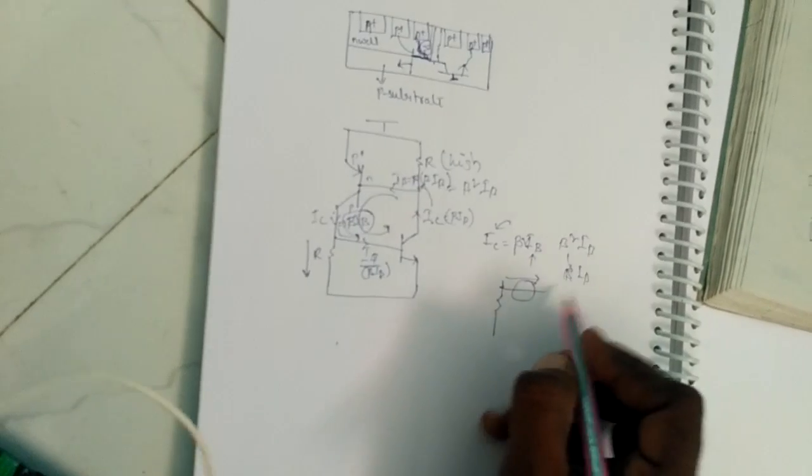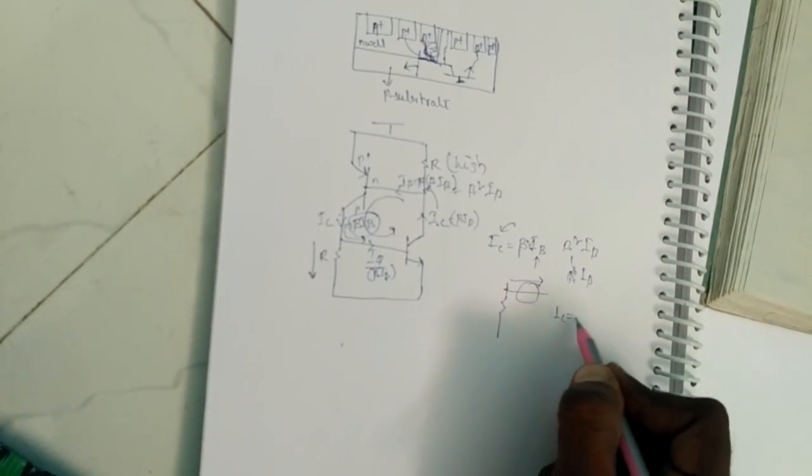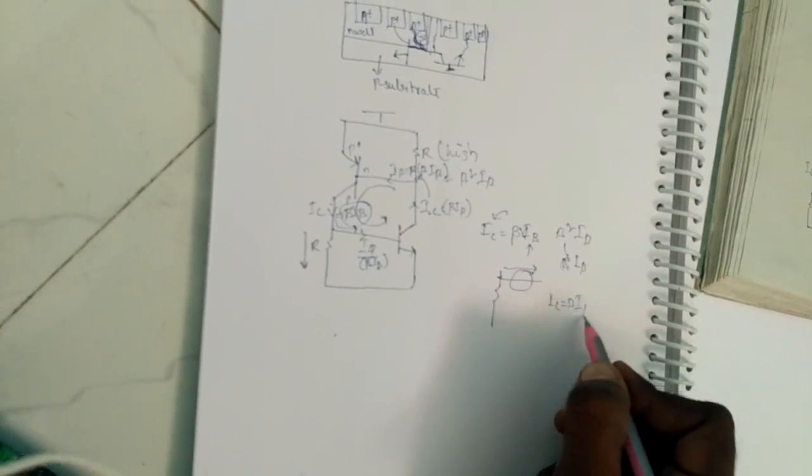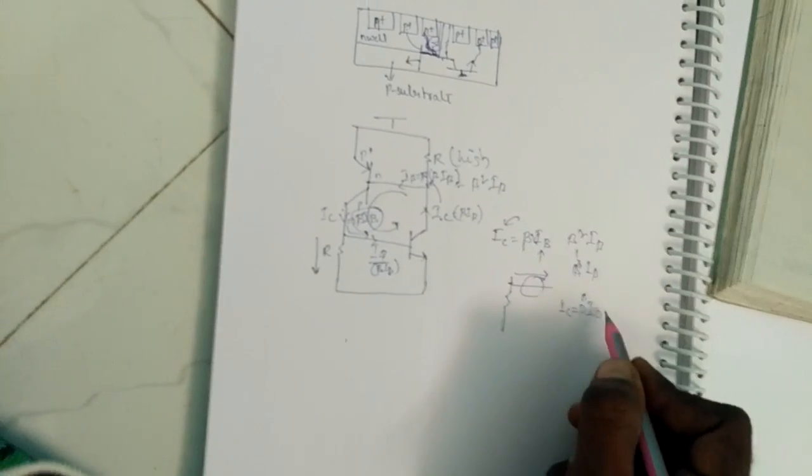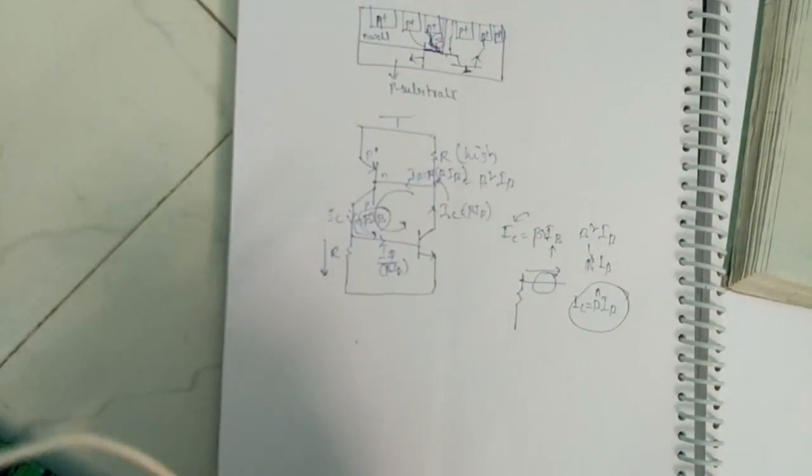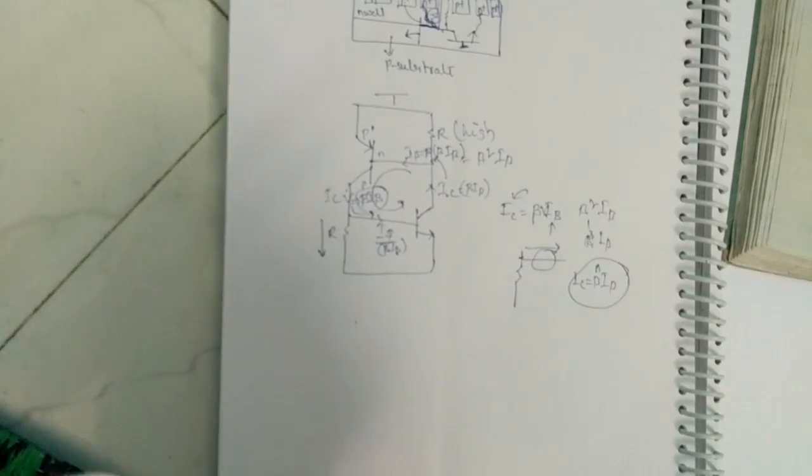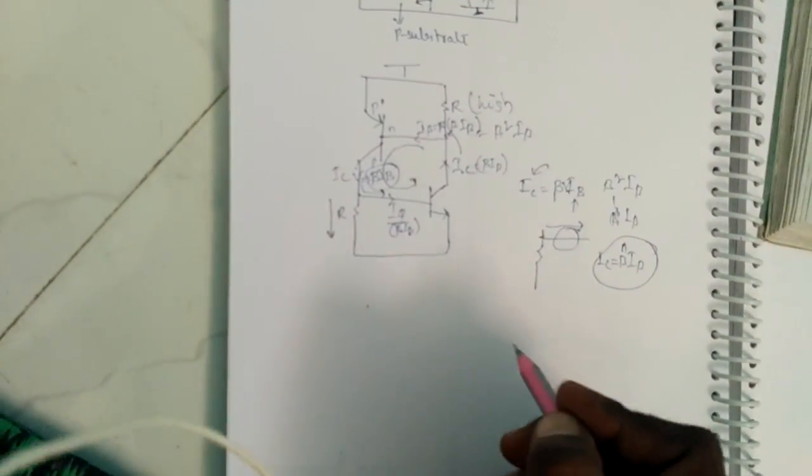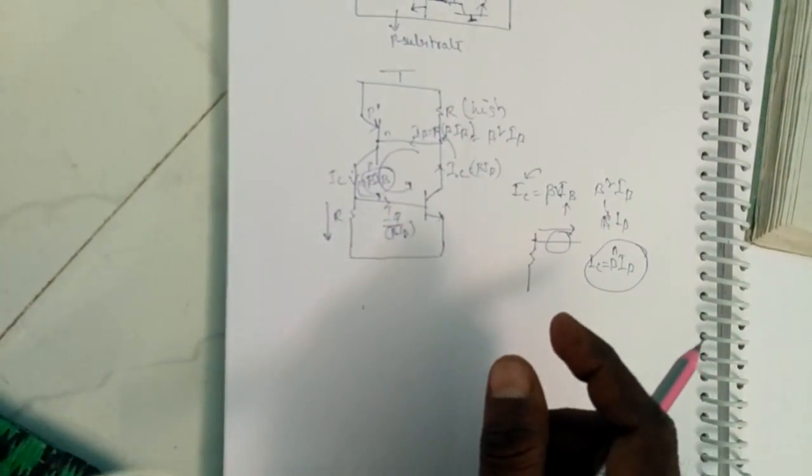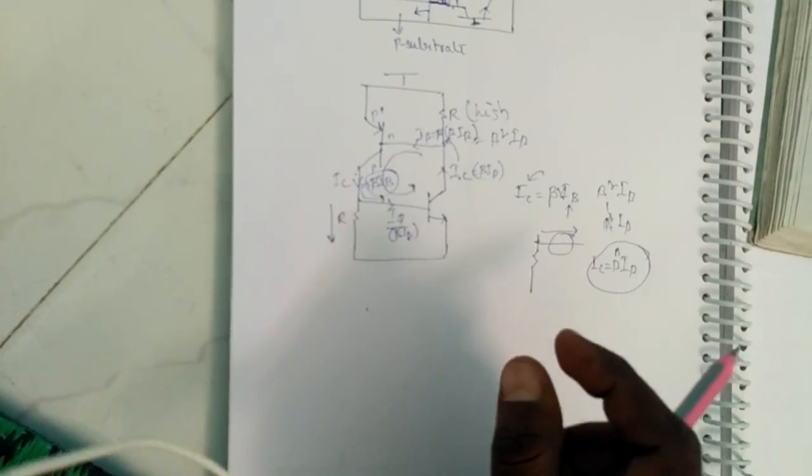So the collector current is gradually increasing—not gradually, it is beta to the power of N into IB. Due to this, the cells which are there in the design will get damaged. This condition is nothing but latch-up.